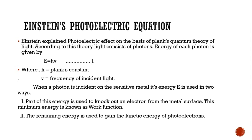The first part of the photon's energy is used to knock out an electron — to eject it out of the metal surface. This minimum energy required to overcome the potential barrier is the work function. For example, if the total energy of the photon is 10 joules and the work function is 6 joules, then 6 joules is used as the work function.